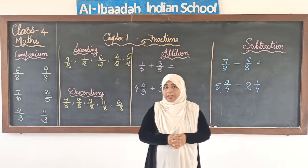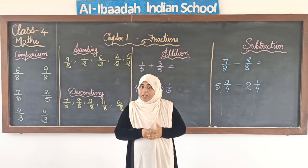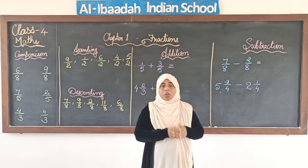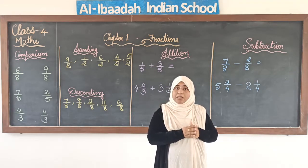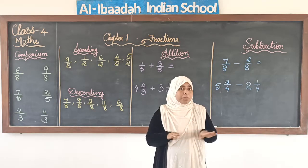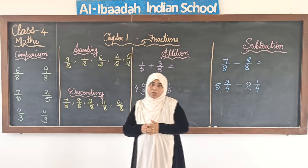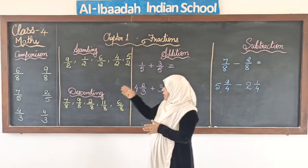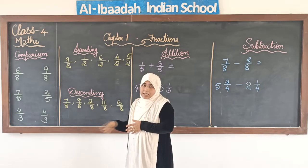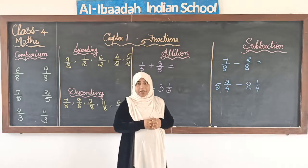So what do we mean by like fractions? Just recall from what we have already learnt. Like fractions are fractions that have the same denominators. They will have different numerators but the denominators remain the same. We are going to compare like fractions today, arrange them in ascending and descending order, and also add and subtract like fractions.